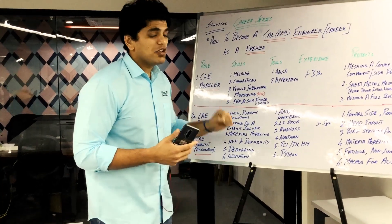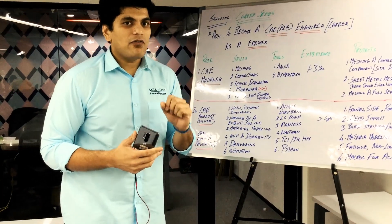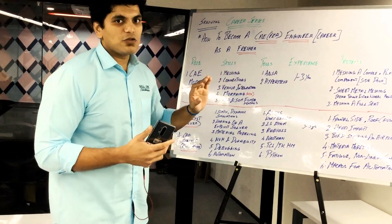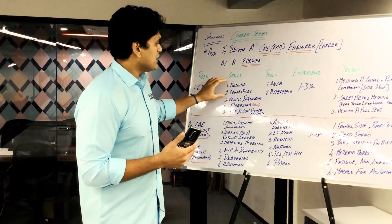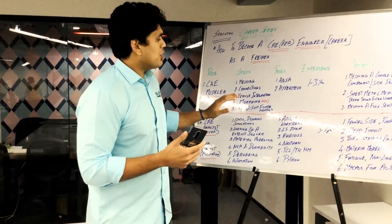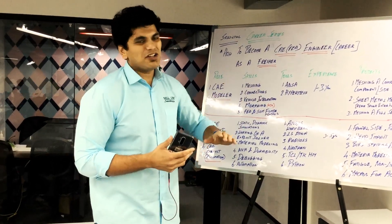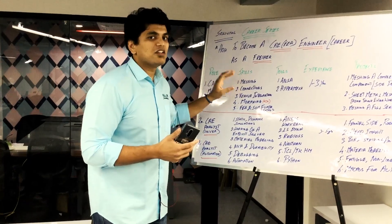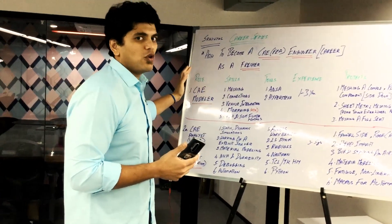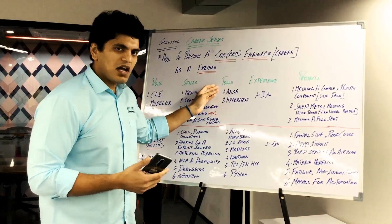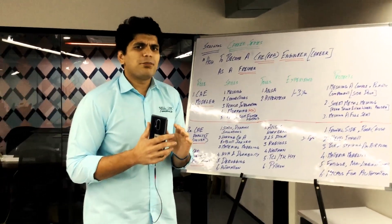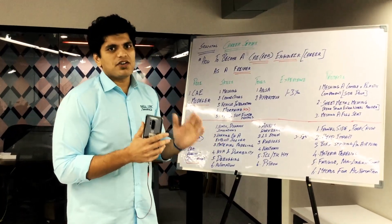The other skill sets you need are a strong fundamental understanding of finite element analysis and strength of materials. Combined with meshing, connections, and vehicle integration knowledge, those are the core requirements. For freshers specifically, meshing and connections are the two things that are absolutely required. The tools widely used in the industry for a CAE modeler are ANSA and HyperMesh.